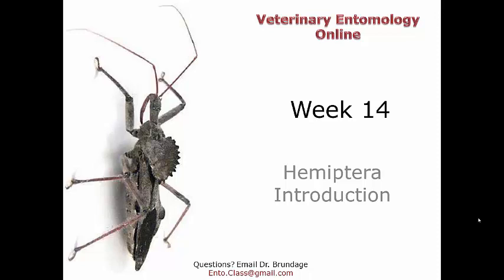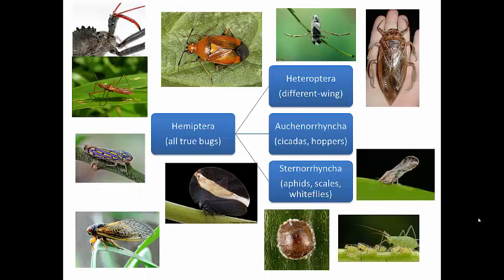We are going to look at a new order of insect — the Hemipterans. Think back to when we were doing insect systematics in this class. I very briefly went over Hemiptera and talked about its true bug status. One of the reasons I went over it is because there are a couple of species in Hemiptera that do cause significant animal problems. We're going to spend this series of lectures talking about those, but first, a quick review.